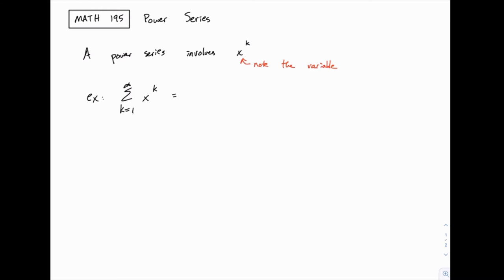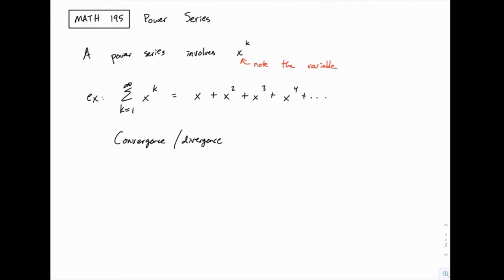When k equals 1, the first term would equal x. When k equals 2, we have x squared, then x to the third, and so on. The key to this kind of series is that if we ask whether it converges or diverges, the answer depends on the value of x. That's the main point: the convergence or divergence of a power series depends on the value of x. For instance, trivially, if x equals 0, you would have 0 plus 0 squared plus 0 cubed, and so on — that converges.